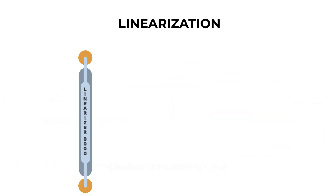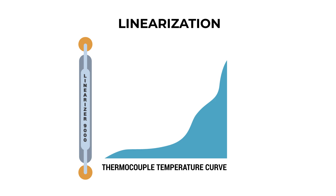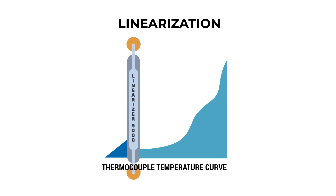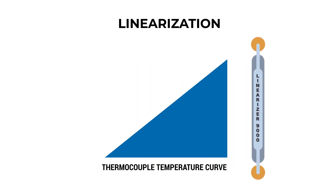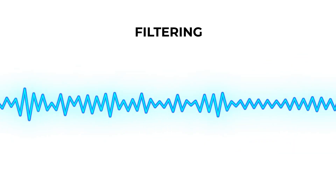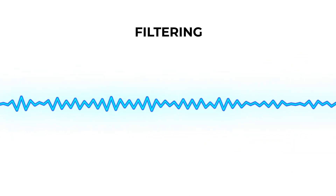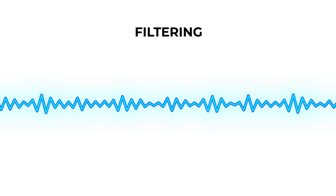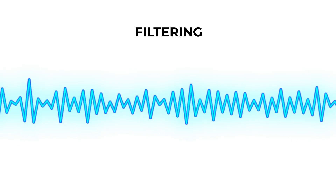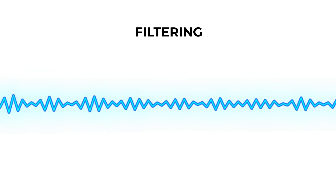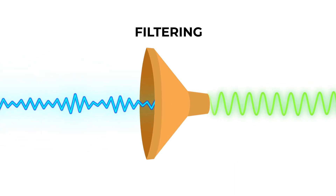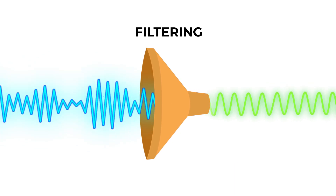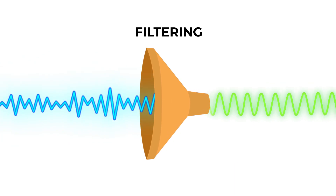Linearization is necessary when sensors produce signals that are not linearly aligned to the physical measurement. This condition is common for thermocouple signals. Not all of the signal frequency spectrum contains valid data. Some frequencies, like those found in 50 to 60 Hz AC power lines, can cause unwanted noise in the signal. That's where filtering is used to eliminate those unwanted frequencies for a clean and consistent signal.